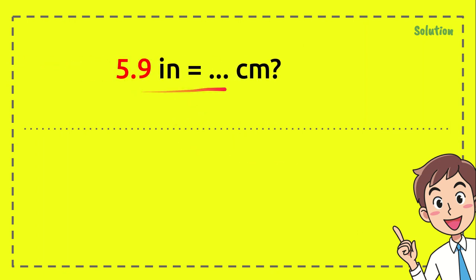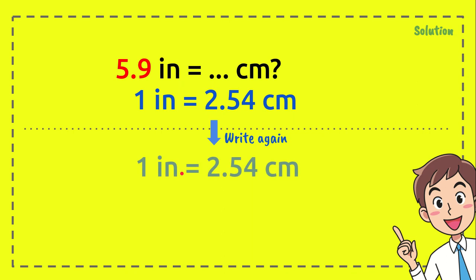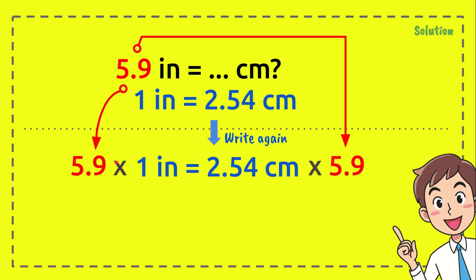First we need to write the question again, and then here is the formula. We need to write the formula again and put it here. After that, we need to multiply 5.9 with this number. So we need to put 5.9 here and here as well. Now, 5.9 times 1 inch...